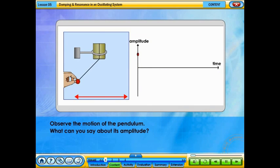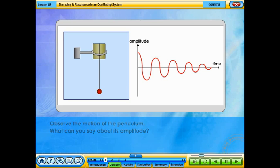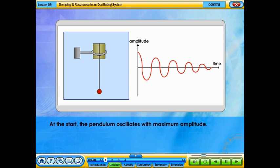Observe the motion of the pendulum. What can you say about its amplitude? At the start, the pendulum oscillates with maximum amplitude. The amplitude of the oscillation decreases with time and finally stops.